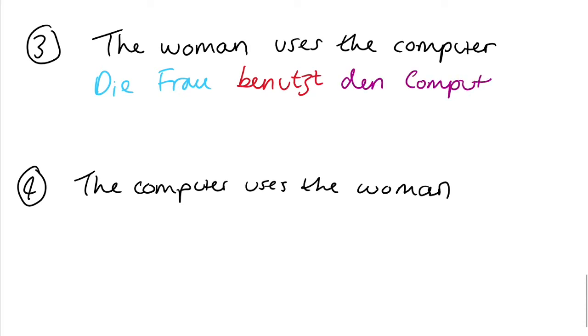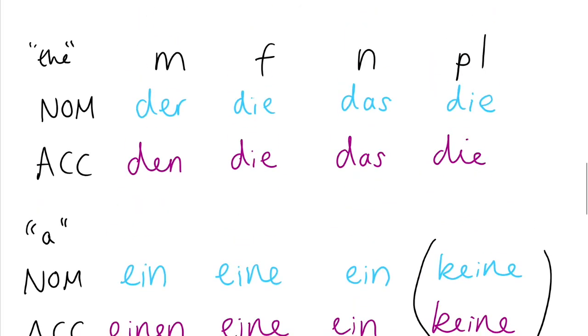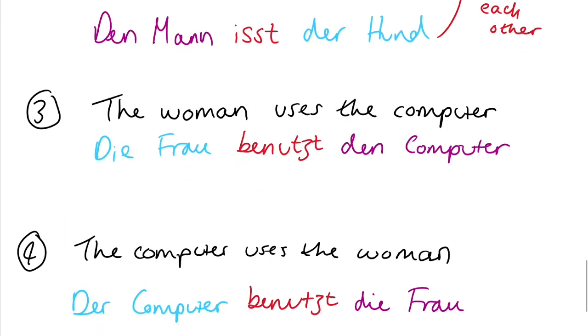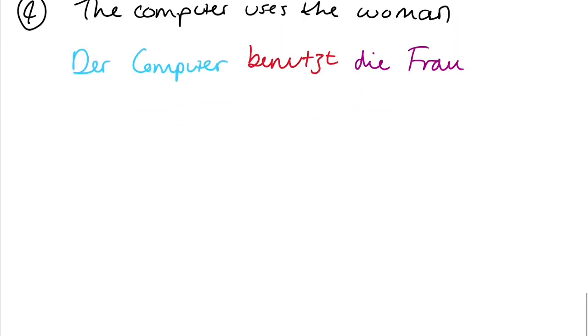Die Frau benutzt den Computer. It's den because it's in the accusative masculine. This time, der Computer, masculine, nominative. Benutzt. Die Frau. Obviously this doesn't make sense in real life. But you get what I mean. Die, feminine, accusative. What's great about the accusative case is the only time when it changes is in the masculine. The rest of them are exactly the same as in the nominative.